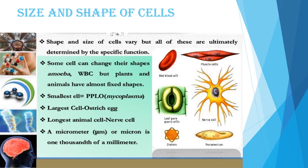Some cells, in order to perform different functions, exhibit different shapes in different parts of the body and in different organisms. Some cells like amoeba and white blood cells can change their shape, whereas most plant and animal cells have a fixed shape. These cells can be spherical, oval, polygonal, cuboidal, spindle-shaped or cylindrical.